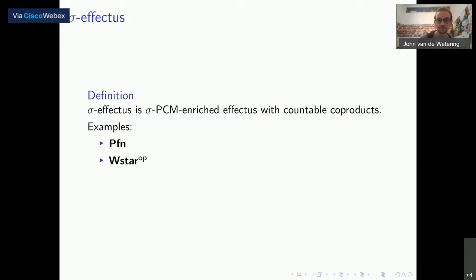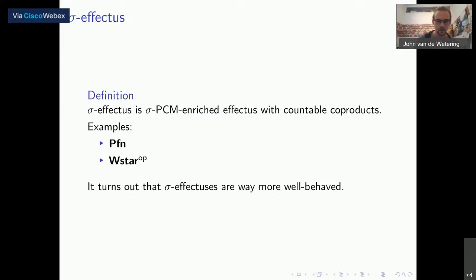We then get to the definition of a sigma-effectus, which is basically just an effectus, but now instead of finite co-products we have countable co-products, and instead of a finite PCM structure we have a sigma-PCM structure — a countable PCM structure. The main examples are partial functions and W*-algebras. It turns out these things are a lot more well-behaved, primarily because the scalars are much more restricted.